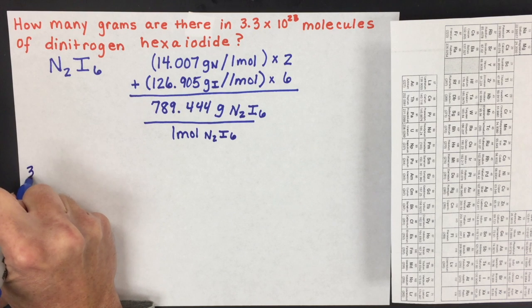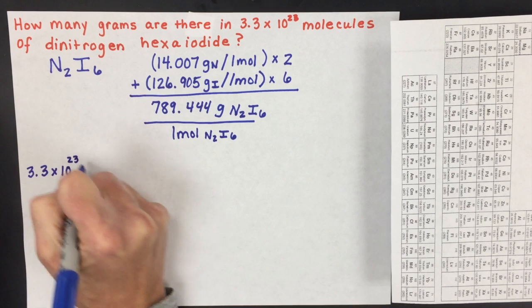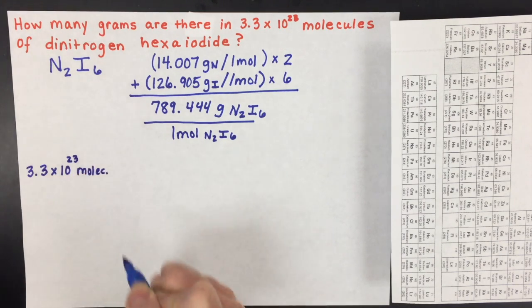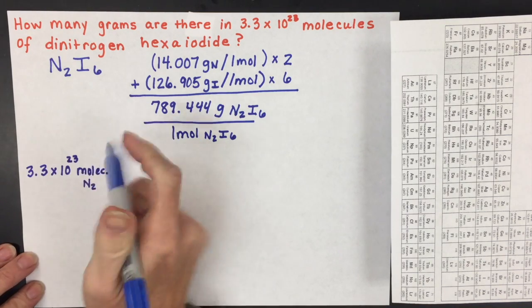You'll start with your given, which is 3.3 times 10 to the 23rd. And it's a covalent compound, so we're going to call it a molecule, abbreviated M-O-L-E-C. And again, we'll have a number, unit, and label.